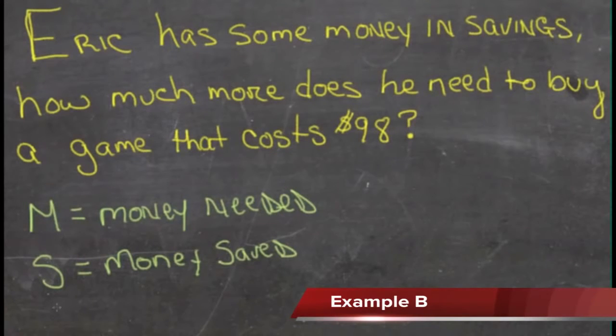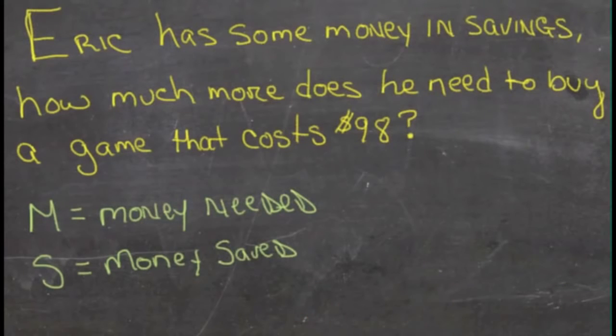We don't know how much money Eric has now, and we don't know how much he's going to need if we take the money that he has and put it toward the $98 cost of the game. So, we're going to use two variables. One, S, represents the money that he's saved, and the other, M, represents the money that he needs.